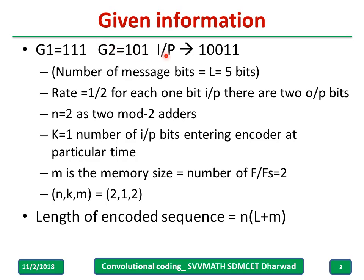Given: g1 equal to 111, g2 equal to 101, and input given as 10011. The total number of message bits is 5. Rate is half, meaning for every one input bit there are two output bits, so n equal to 2, k equal to 1, and memory size m is 2 because there are two flip-flops. In general, we write for convolutional coding: n is 2, k is 1, and memory is 2.